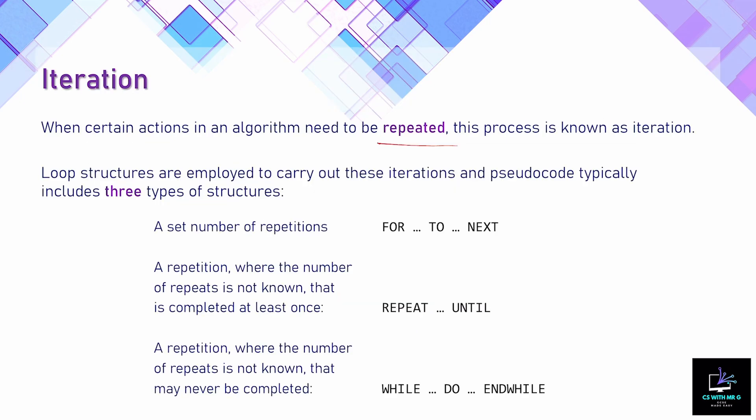When instructions in an algorithm need to be repeated — when they need to happen more than once — this is called iteration. To iterate means to go back and do it again. I'm treating this as if you've not experienced any programming whatsoever. A loop structure is used to repeat instructions in an algorithm, and there are three ways in which we do this.